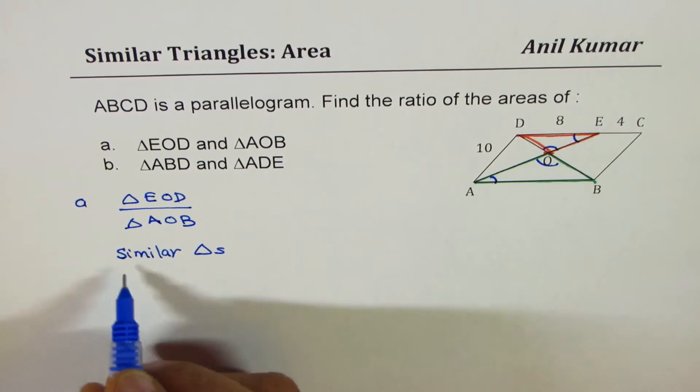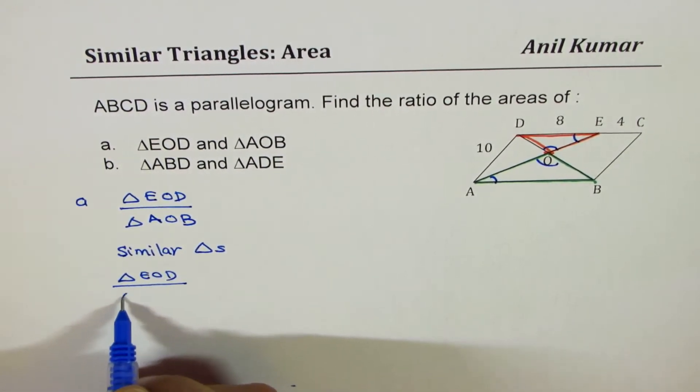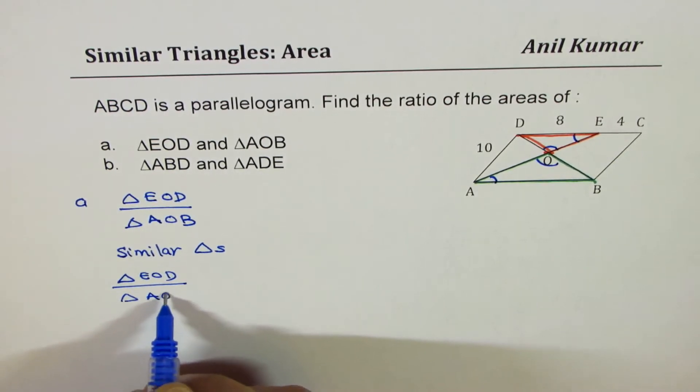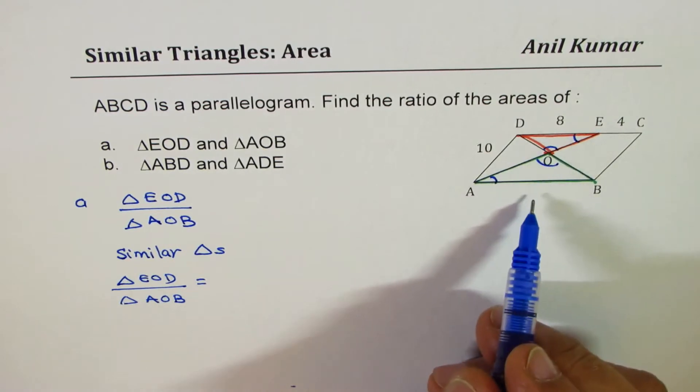the ratio of the area of triangle EOD over area of triangle AOB should be equal to square of the sides ratio, right?